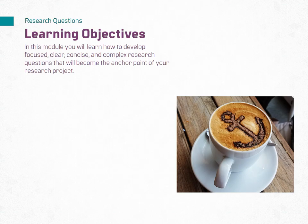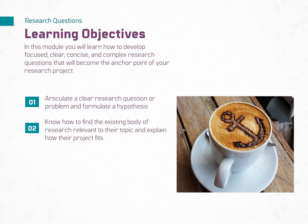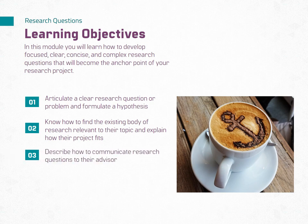In this module, you will learn how to develop focused, clear, concise, and complex research questions that will become the anchor point of your research project. By the end of this module, learners should be able to articulate a clear question or problem and formulate a hypothesis, know how to find the existing body of research relevant to their topic, describe how to communicate research questions to their advisor, and recognize how to take feedback from their advisor on their research questions.